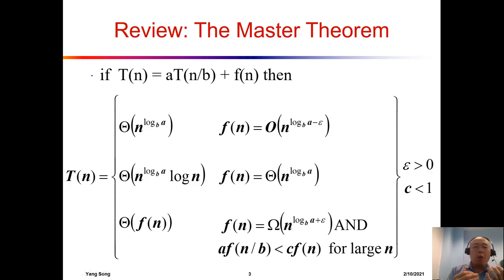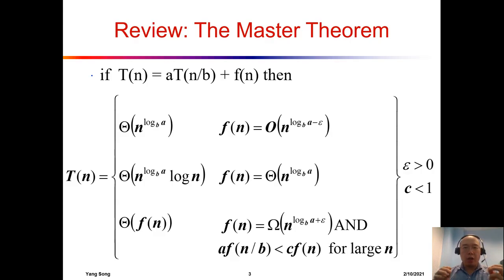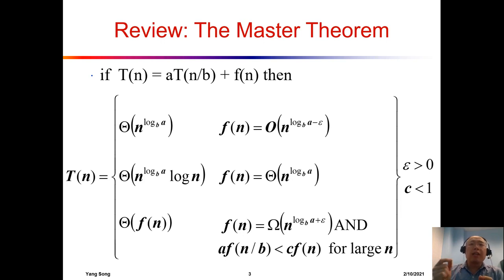After that, we only have to compare two things: f(n) and n to the power log_b(a). We want to figure out if f(n) and n^(log_b(a)) grow equally fast, or if f(n) is faster or f(n) is slower. After figuring this out, you will be able to see which case it might be — case one, case two, or case three.